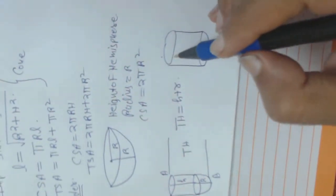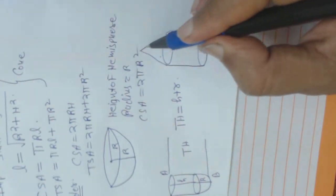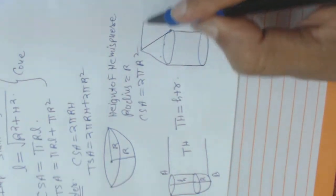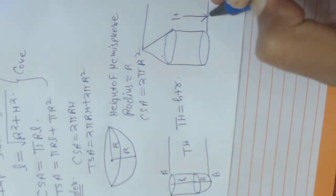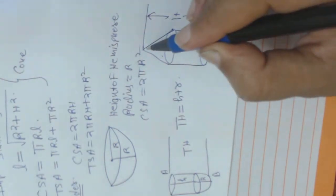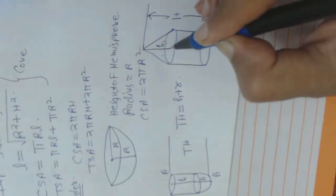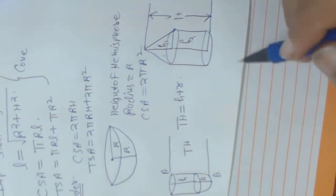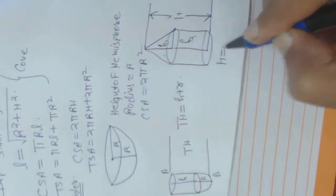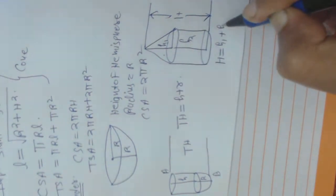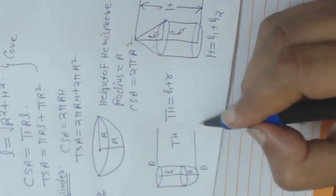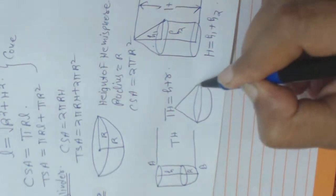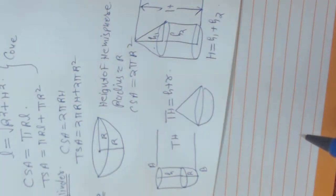For cylinder mounted by a cone, total height H. This height is h1 and this height is h2. So this H equals to h1 plus h2 for cone mounted on a hemisphere.